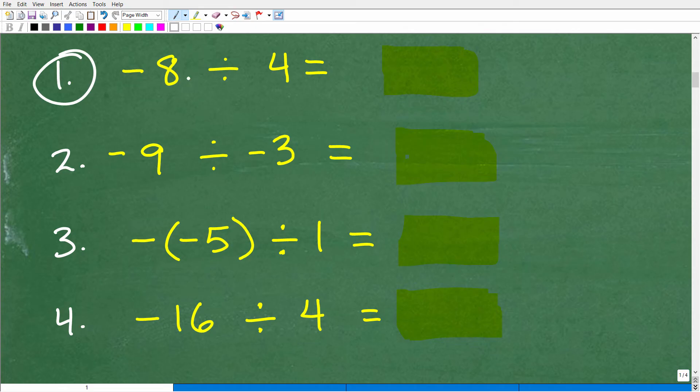So, the first problem is negative 8 divided by a positive 4. So, let's first address the question, what is the sign of our final answer? Well, this is a negative. This is a positive, different signs. Remember, if the signs are different, the final answer is going to be negative. So, now we just have to do the actual math. So, 8 divided by 4 is 2, but we have a negative 2 as our final answer. So, pretty easy stuff. You've got that right. Excellent.